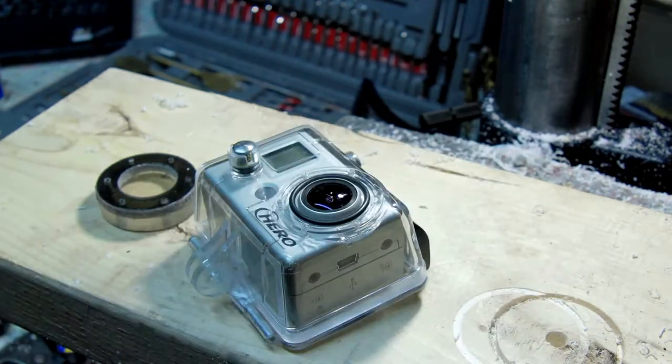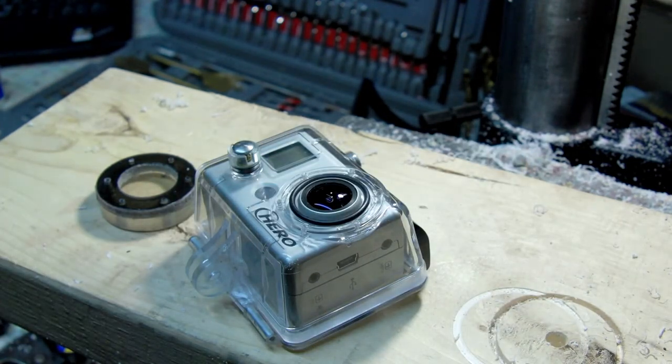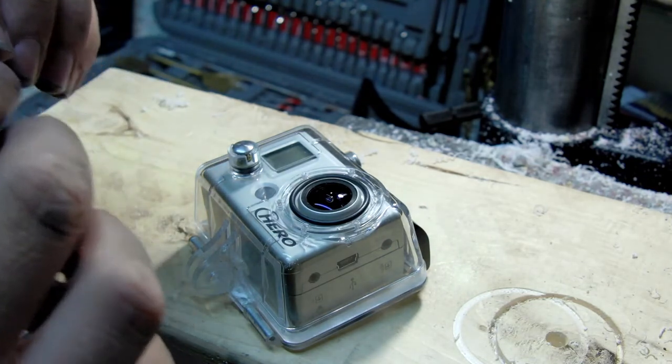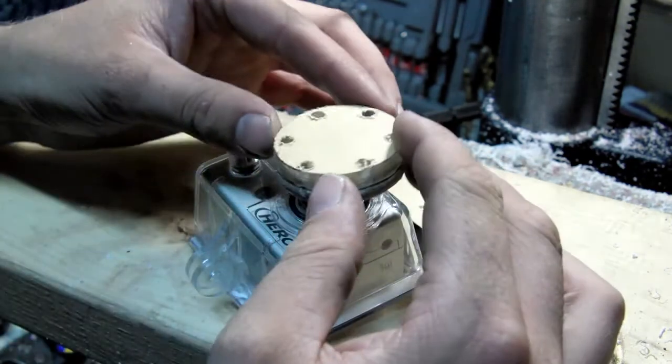Once you've finished countersinking all the holes, you can put your new lens on. I got a new gasket, but you might be able to use the old one.